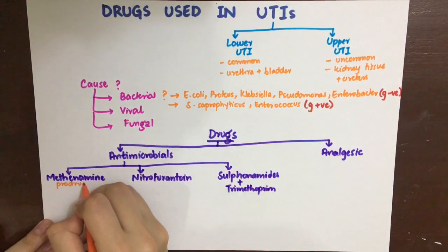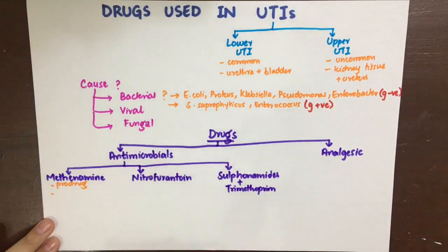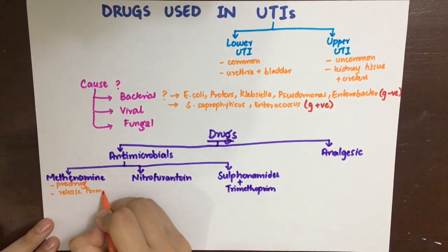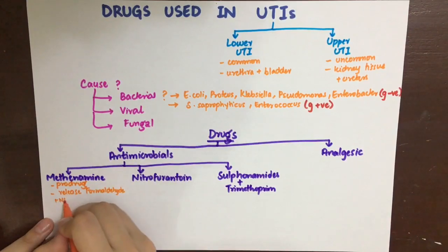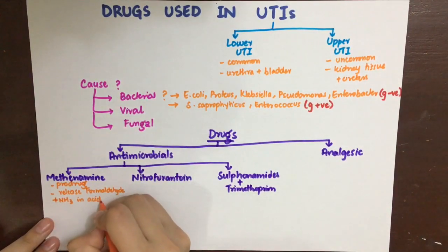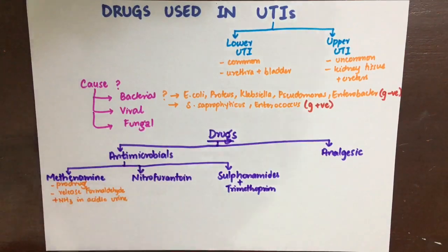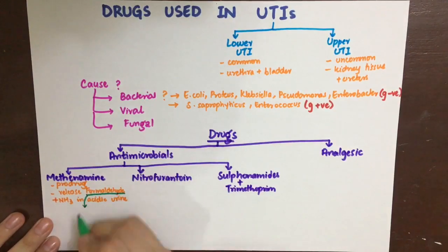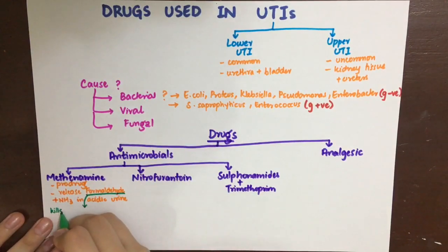First, methanamine is a prodrug. In acidic pH, it is hydrolyzed into ammonia and formaldehyde. Formaldehyde is the active antiseptic needed in the urinary tract — it inhibits growth of both gram-positive and gram-negative organisms and has bactericidal activity.